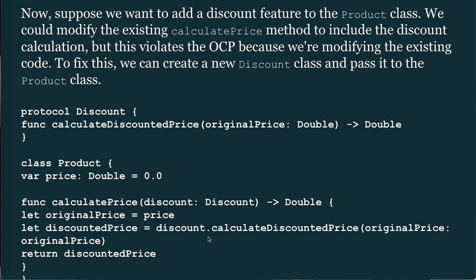To fix this, we can create a new Discount protocol and pass it to the Product class: protocol Discount { func calculateDiscountedPrice(originalPrice: Double) -> Double }; class Product { var price: Double = 0.0; func calculatePrice(discount: Discount) -> Double }.